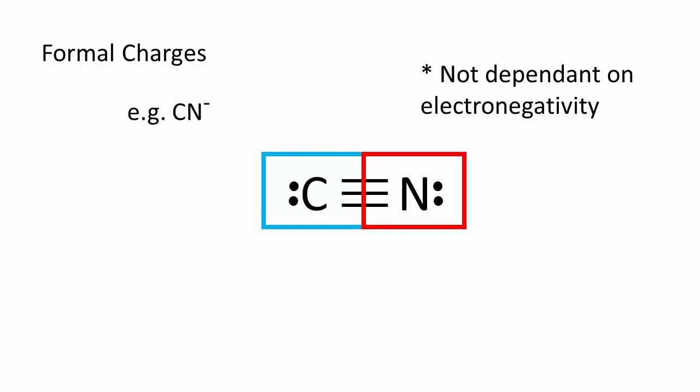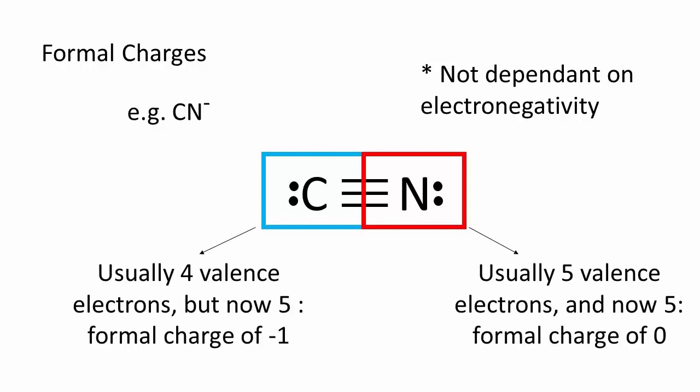Five electrons are assigned to each atom. Free carbon and nitrogen atoms have four and five valence electrons respectively, so the carbon atom has a formal charge of negative one, and the nitrogen has a formal charge of zero.